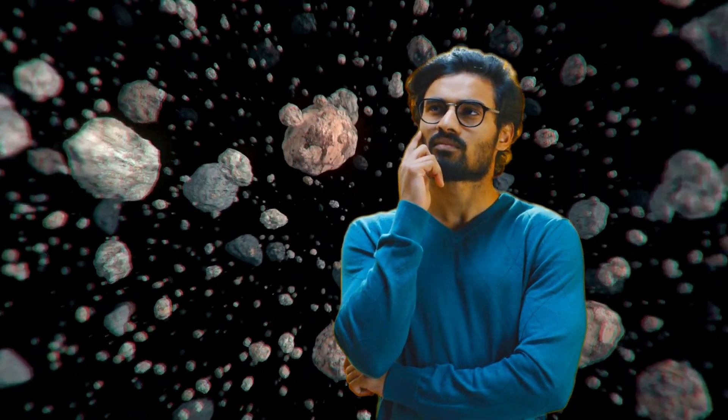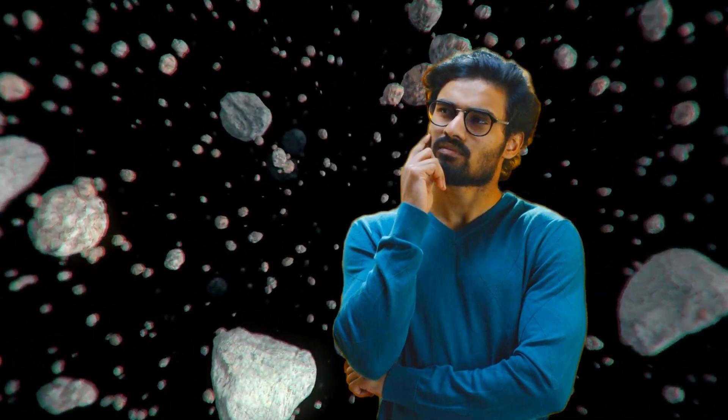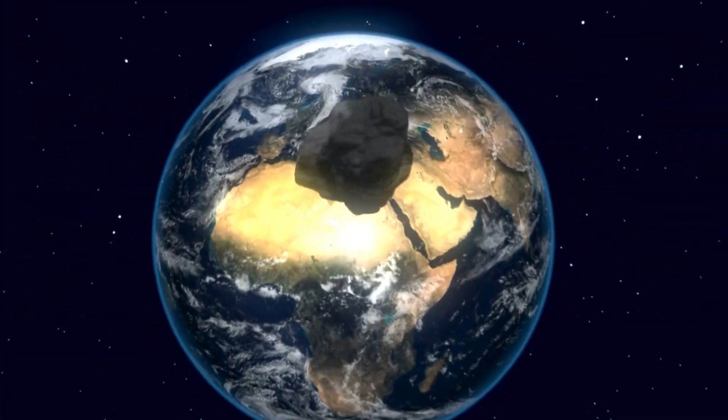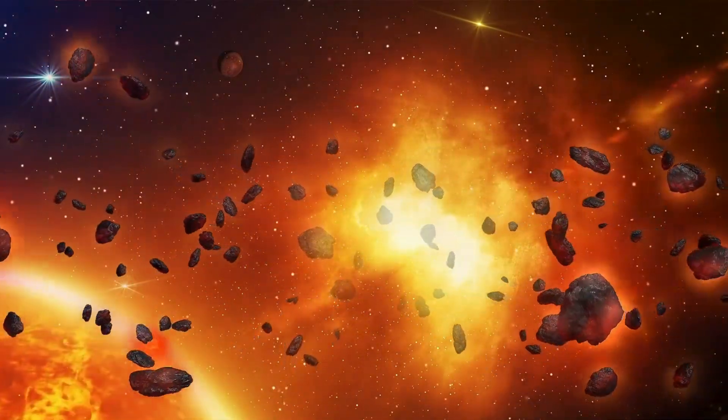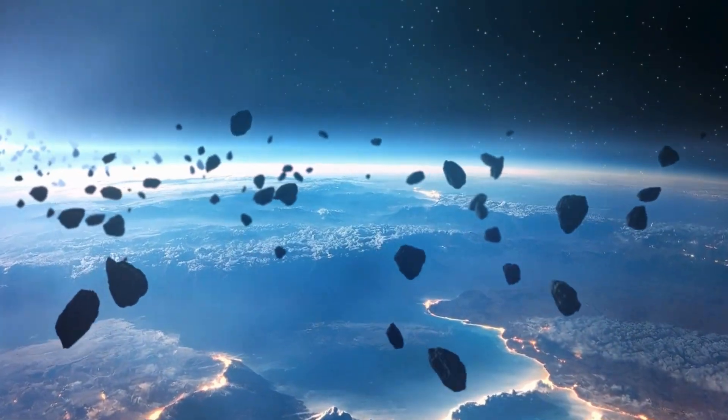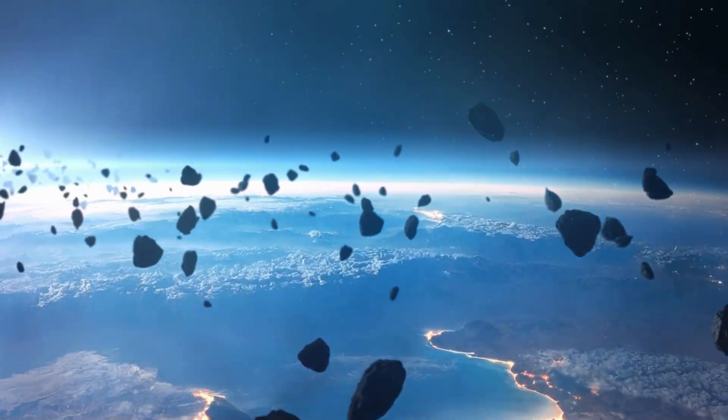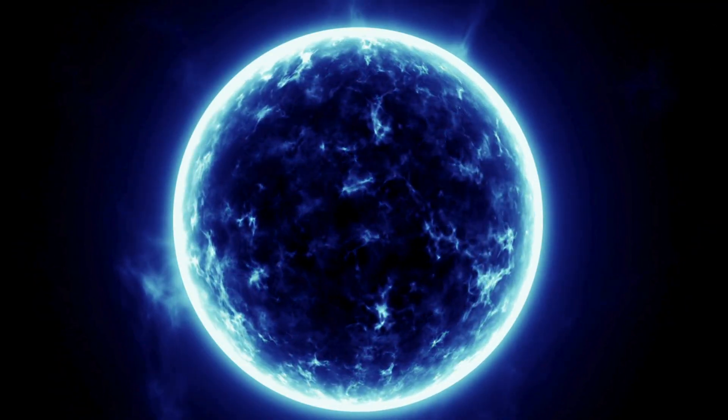But wait. Why didn't Earth just disintegrate completely? Well, gravity came to the rescue. Even though the collision was massive, Earth's core managed to hold itself together. Meanwhile, the debris floating around in orbit started sticking together, thanks to good old gravitational attraction.